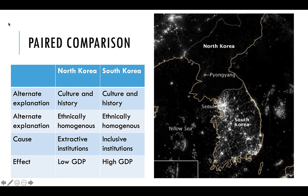The border between North and South Korea wasn't done entirely randomly — it was in part the result of years of warfare. What if Koreans who agreed with a communist ideology all moved to the North during this time, while Koreans who believed in capitalism moved to the South? If that did happen, it would weaken the argument that cultural national ideology doesn't matter.